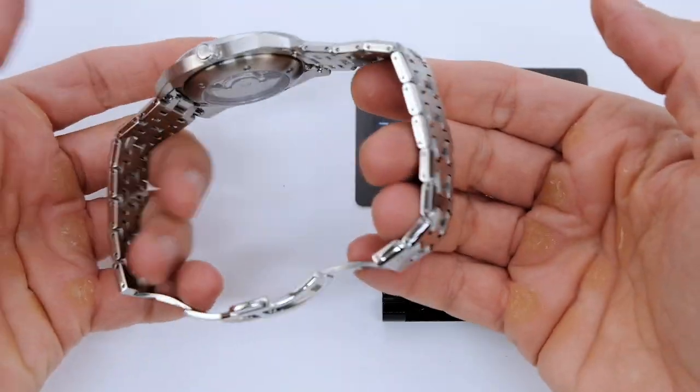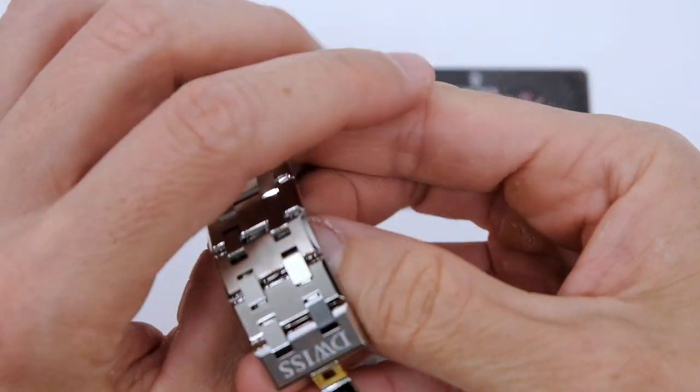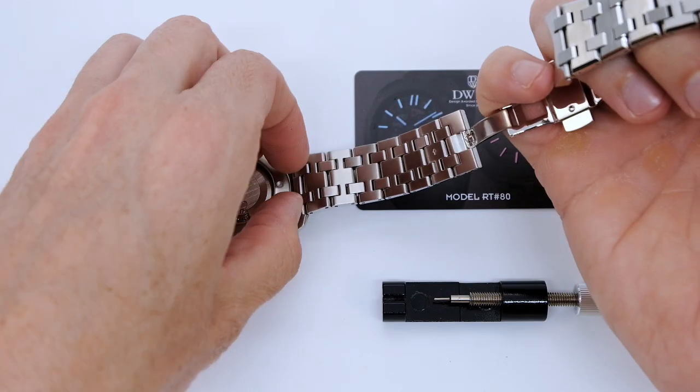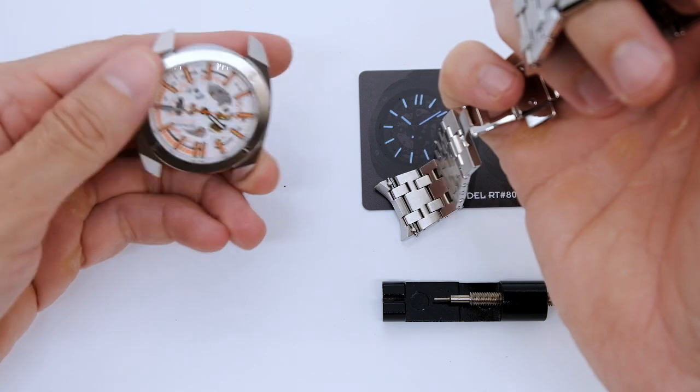If you want to remove some links here, you first take out the bracelet. It's very simple, you just push the pins here on the other side.